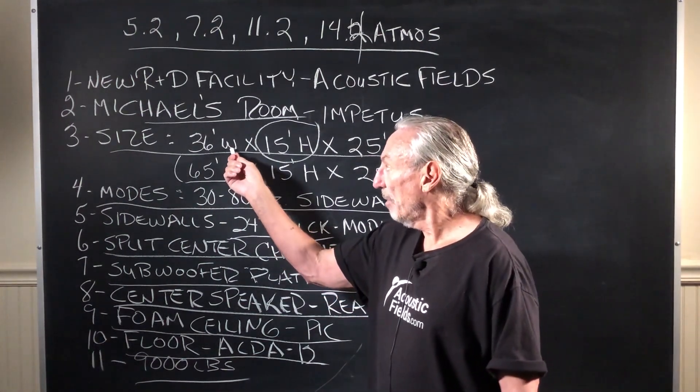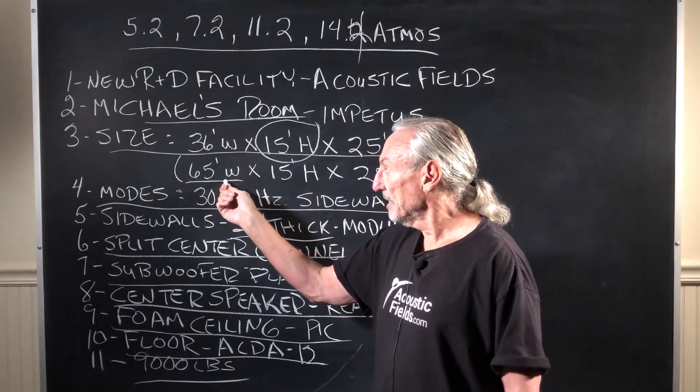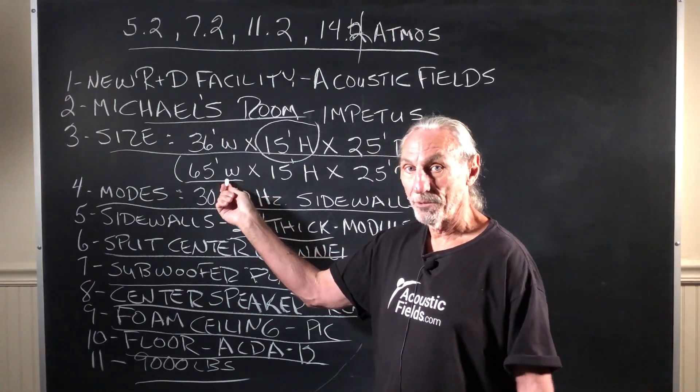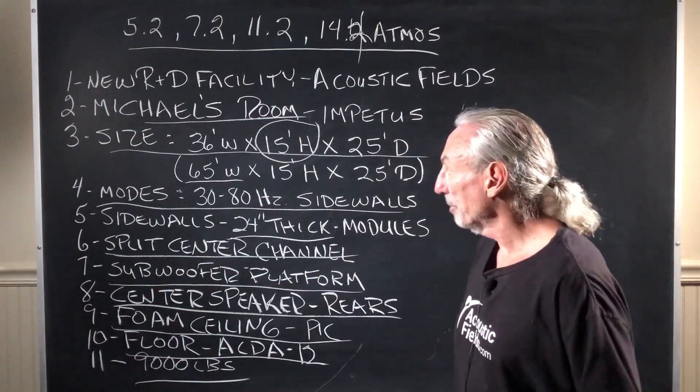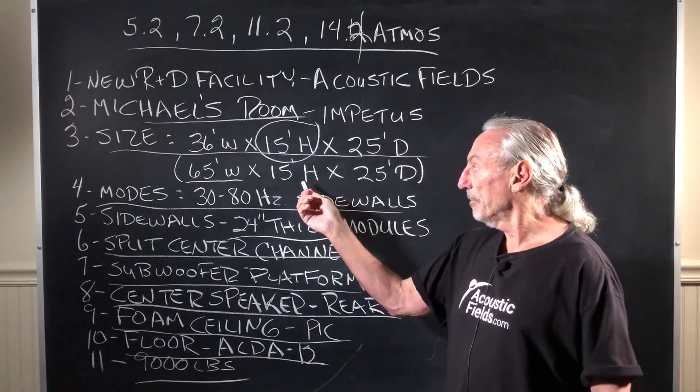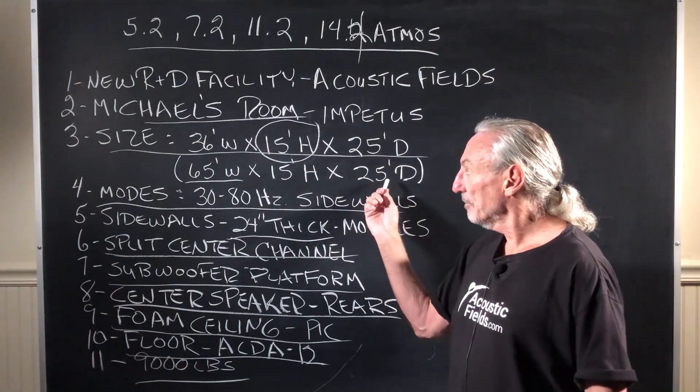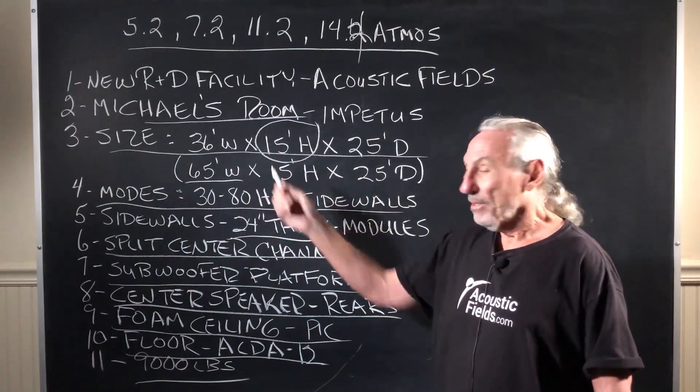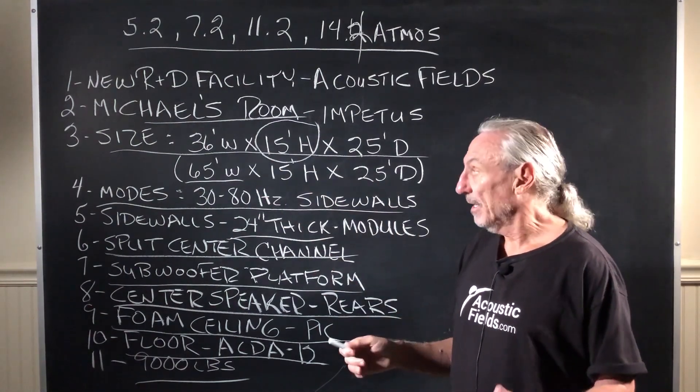The 36 wide room sits inside a 65 foot room, so I even got more room for low frequency pressure to expand. So we've got a 15 foot high ceiling and 25 foot depth. So I got a lot of space, a lot of volume.